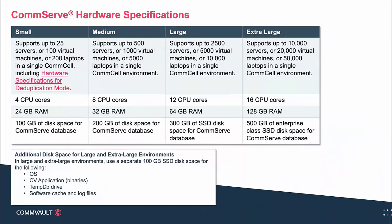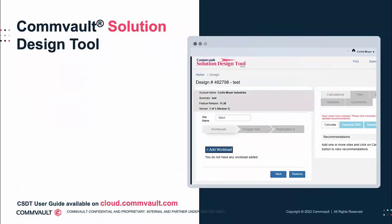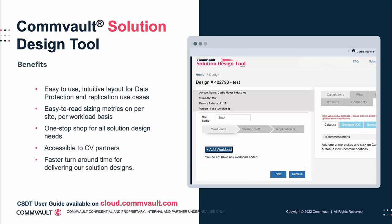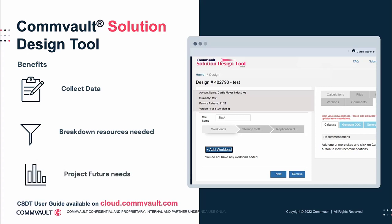Commvault provides a detailed hardware specification guide to help you determine the correct hardware to run the CommServe at the scale of CommCell you are designing. Hardware and software specifications can change with new software releases, so it is recommended to always refer to the Commvault documentation website for the latest specifications at documentation.commvault.com. In support of appropriately sizing opportunities, the Commvault solution design tool has been created. Workload information collected from data profiling sessions with your customer can be entered here, and the tool will provide a breakdown of the resources required for the environment, along with projecting future needs. Be sure to use the tool to easily build, view, and share designs to deliver a complete proposal to your customer.